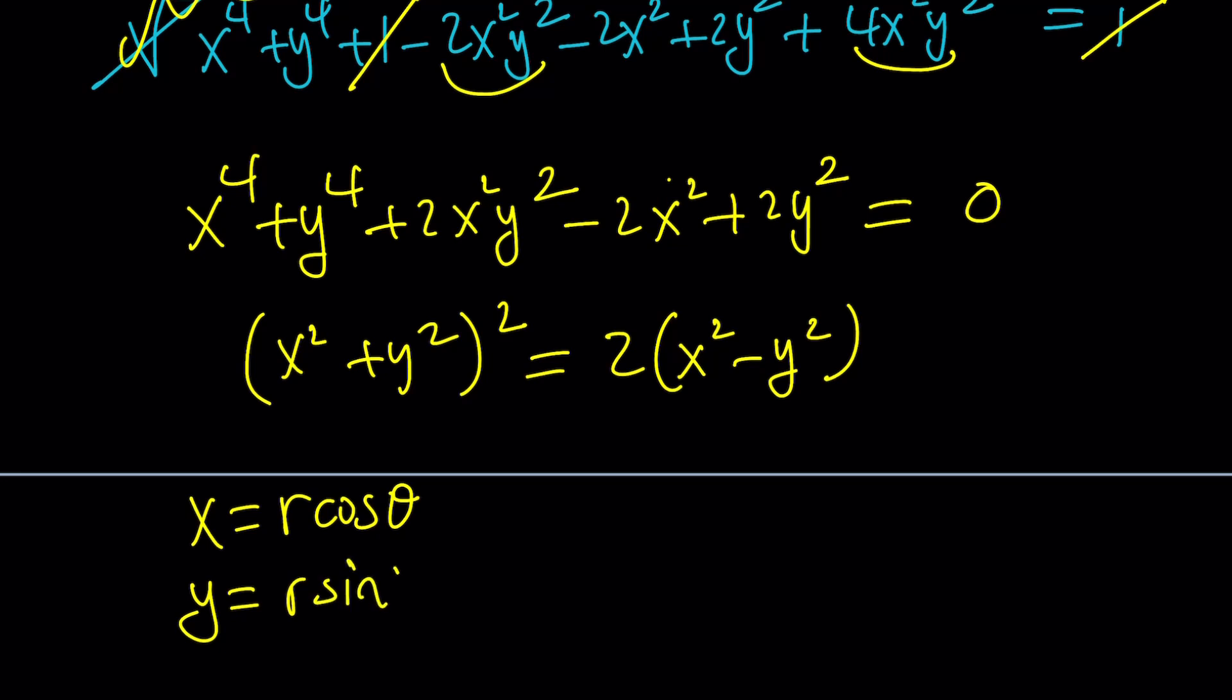You replace x with r cosine theta and y with r sine theta. Because if you remember the polar coordinate system, you have a point that is designated as x, y. Right? And this is the theta, the angle. And then the x and y coordinates are basically, and r is obviously the modulus. And this also represents a complex number. And we are talking about complex numbers here, right? Exactly.